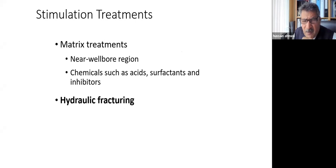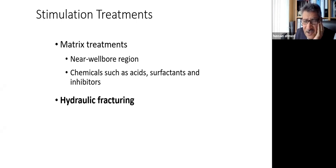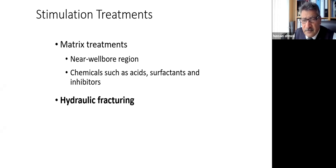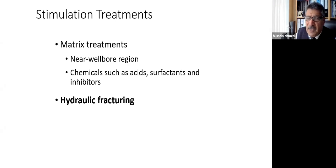A fracture deals with the matrix — the solid rock grains. Acid fracturing uses acid at high pressure to eat the rocks and make a hole inside the matrix. The matrix grains are: sandstone is SiO₂ (silica), limestone is CaCO₃ (calcium carbonate), and dolomite is CaMg(CO₃) — these are what the fracture attacks to fracture the rocks.